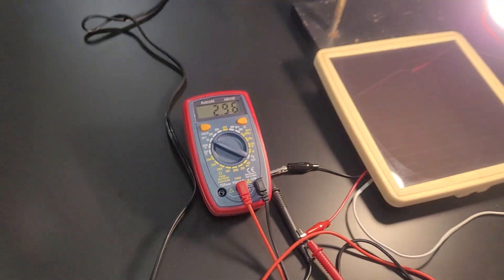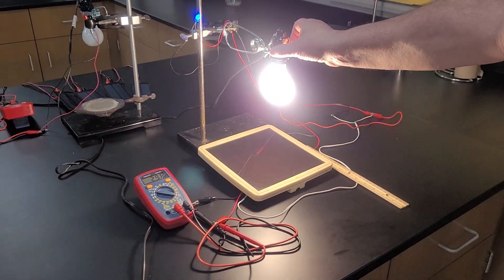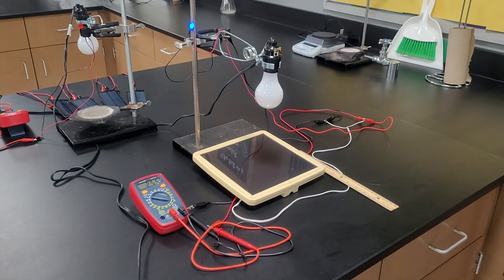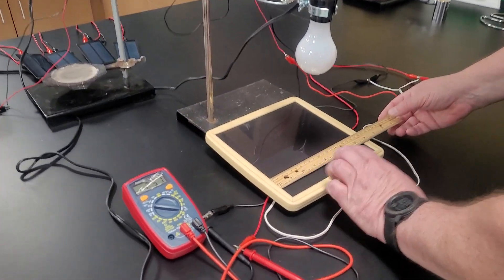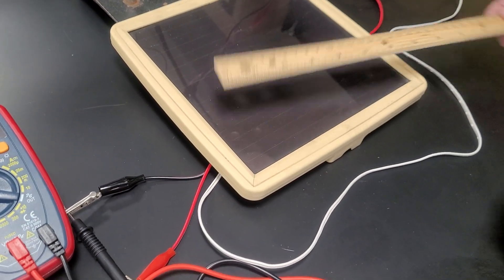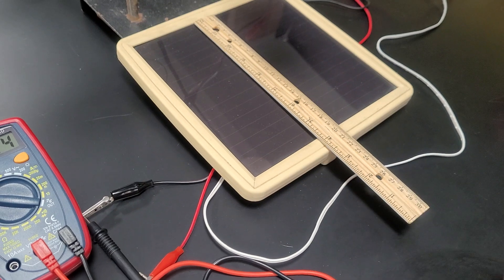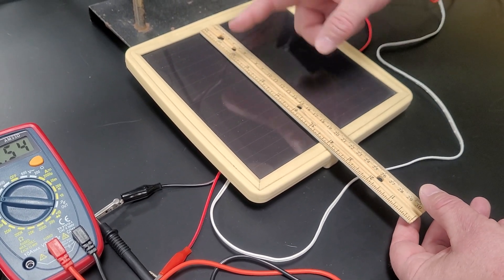And one of the comparisons we want to do is we want to compare the size of the panels and so to do that we're going to take a quick measurement here and we're just going to measure the inside of the frame to inside the frame and this will measure out to be approximately 19.5 centimeters by 19.5 centimeters. So then we can do a quick calculation to figure out our surface area.